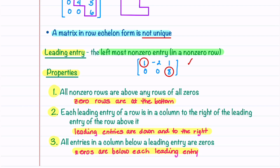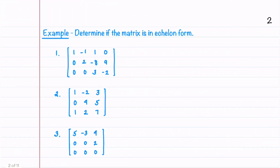Let's now look at an example where we're given four matrices and asked to determine if they're in echelon form. Since our first matrix has no zero rows, we'll begin by circling the leading entries and checking if they're down and to the right. We can see that they are indeed down and to the right. Let's now check if there are zeros below these leading entries — we have zeros below this one and a zero below this one. This means that this matrix is in echelon form.